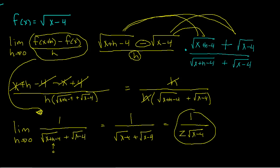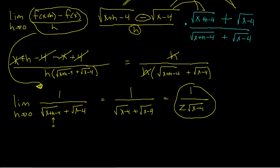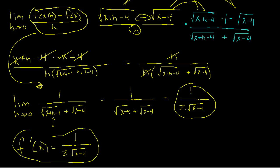So there is my final derivative. The derivative of my function, f prime of x, is 1 divided by 2 times the square root of x minus 4. That is the derivative of my function.